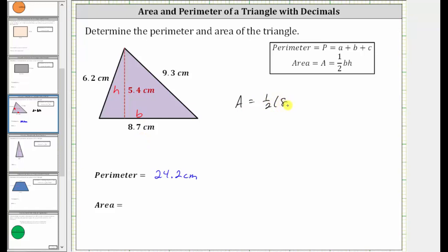which is 8.7 centimeters, times the height, which is 5.4 centimeters. This product will give us a number of square centimeters that will fit inside the triangle. To determine the product, let's first determine 1/2 times 8.7, where if it's helpful, we can write 1/2 as a decimal. 1/2 is equal to 5 tenths, or 0.5. So the area is also equal to 0.5 times 8.7 times 5.4.